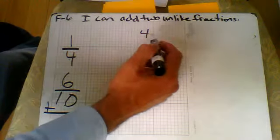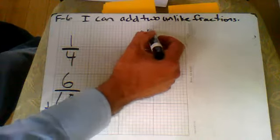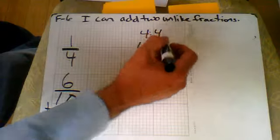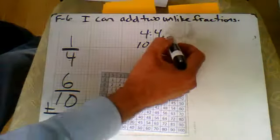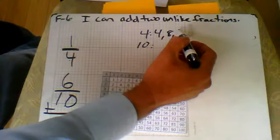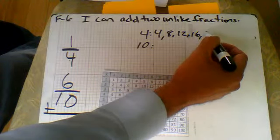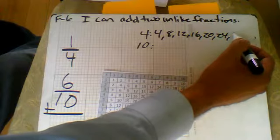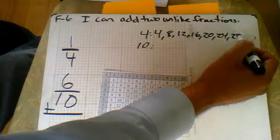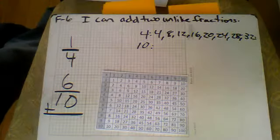So first thing we're going to do is find the multiples of both 4 and 10. I can use my multiplication table here if I need to. 4, 8, 12, 16, 20, 24, 28, 32. We could keep going out.